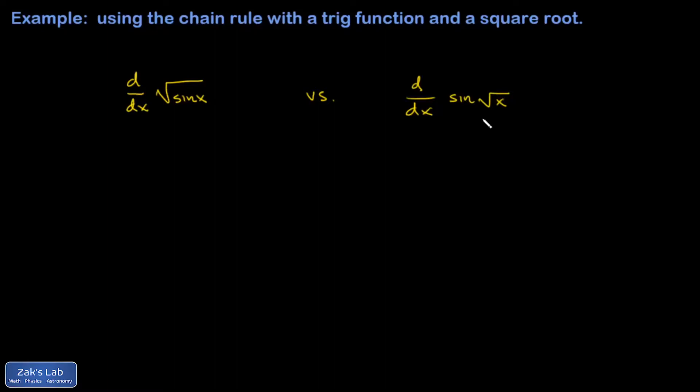In this video, we're looking at two functions that look sort of notationally similar. They both involve a sine function and a square root. But the square root occurs in a different spot, and we want to compare the derivatives of these two functions.